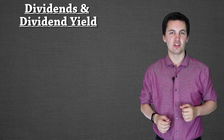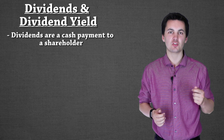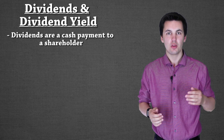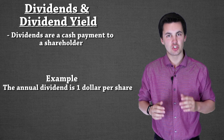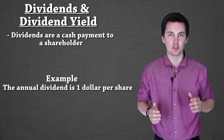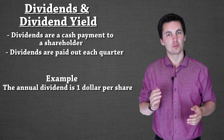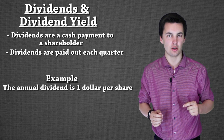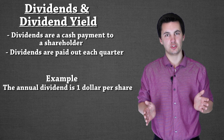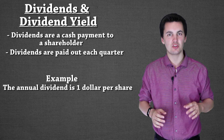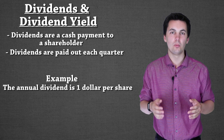Another important thing to understand when investing is dividends and the dividend yield. Some stocks offer dividends, which are cash payouts. By owning a share of a company, they will pay you throughout the year. Let's say the company is offering a $1 annual dividend — for each share you have, you get $1 per year, broken up quarterly. That can seem small, but it adds up, especially when you own multiple shares. Not all companies offer dividends; high-growth stocks probably won't, as they'll be reinvesting money into the company and you get value from the share price going up instead.